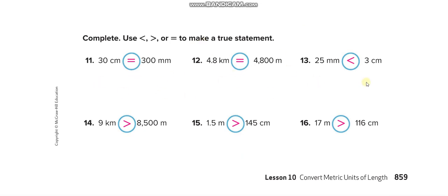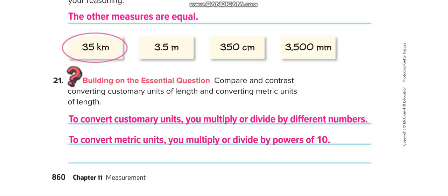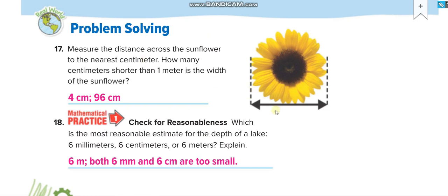Solve these questions and then match your answers from this video. Here, measure the length of this flower — when you put your ruler, you will see it is 4 centimeters. One meter is 100 centimeters, so it is 96 centimeters less than one meter. Which is the most reasonable estimate for the depth of a lake — 6 millimeters, 6 centimeters, or 6 meters? Six millimeters and 6 centimeters are too small, so the answer is 6 meters.